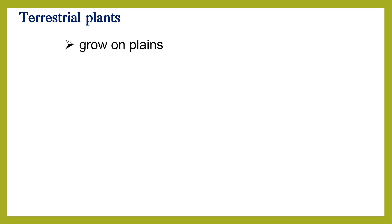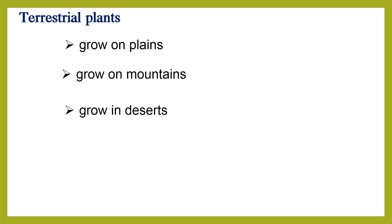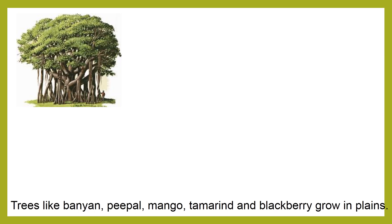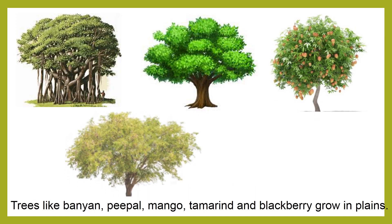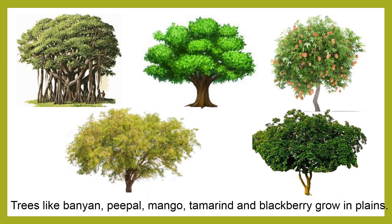Terrestrial plants grow in different places. Some are grown on plains, some are grown on mountains, and some are grown in deserts. Trees like banyan, peepal, mango, tamarind, and blackberry grow in plains.